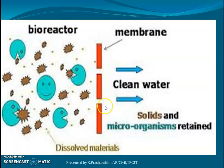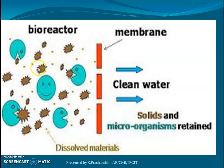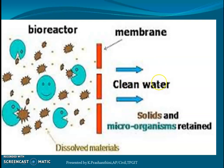The filtration mechanism shows the membrane represented by a red line, with pore sizes ranging from 0.035 micrometers to 0.4 micrometers, covering microfiltration to ultrafiltration. The bioreactor contains microorganisms and suspended solids of organic or inorganic nature. The membrane prevents these solids and microorganisms from passing through, allowing clean treated sewage to be obtained from the other side.